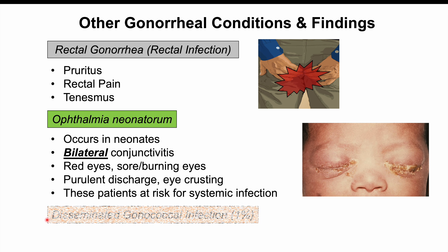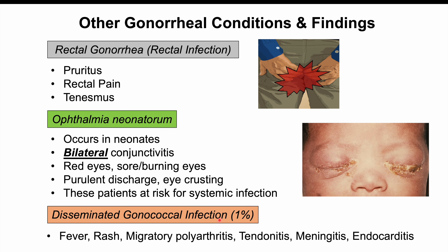Disseminated gonococcal infection is rare, occurring in only 1% of patients, and is more likely due to serum-resistant strains. Signs and symptoms include fever, rash, migratory polyarthritis — multiple painful, swollen joints that change location over time — tendinitis, meningitis (inflammation of the meninges covering the brain), and endocarditis (inflammation of the inner lining of the heart).